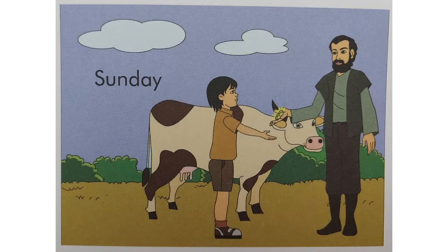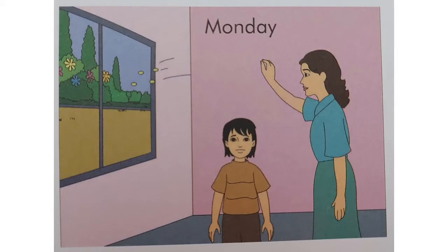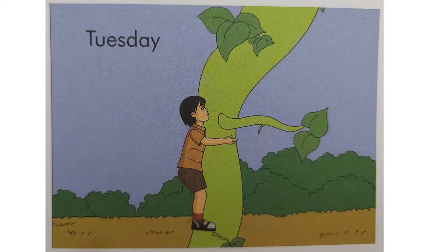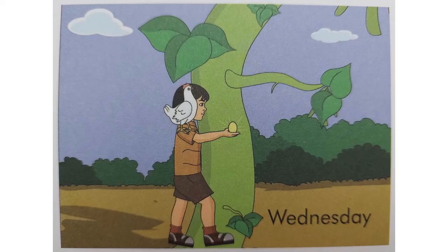On Sunday, Jack exchanged his cow for some magic beans. On Monday, his mother threw them in the garden. On Tuesday, Jack began to climb up the beanstalk. On Wednesday, he came down with a hen that laid golden eggs.